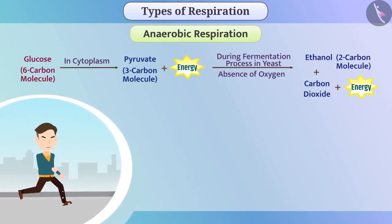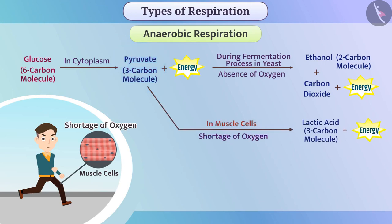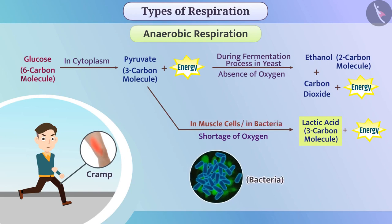Sometimes while doing work, the need for energy increases. In such a situation, there is often a shortage of oxygen in the muscle cells. To generate energy in low oxygen, these cells break down pyruvate into the 3-carbon molecule lactic acid. Formation of lactic acid can cause cramps. This method of generating energy can also be seen in some bacteria.